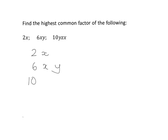I'll rearrange 10yxz as 10xyz, since the order of multiplication doesn't matter. Now I want to find the highest common factor. Is there a number that can divide into each and every one of these? Yes — the highest common factor of 2, 6, and 10 is 2. And 2 can go into 2, into 6, and into 10, so 2 can divide into 2x, 6xy, and 10xyz. So 2 is definitely part of my highest common factor.